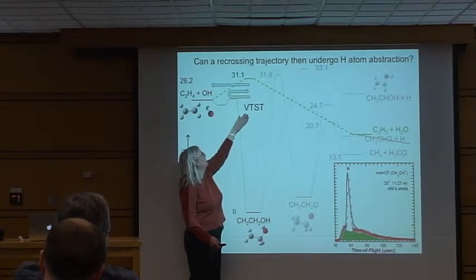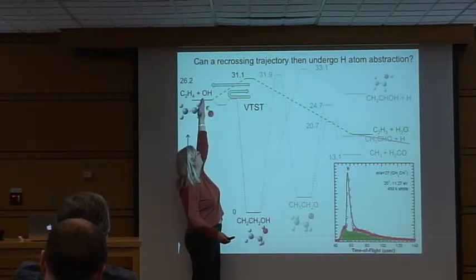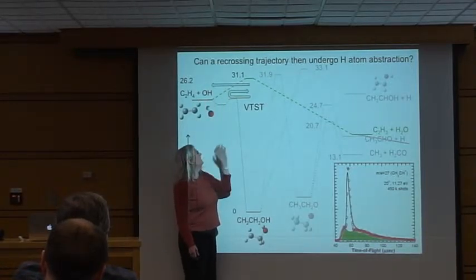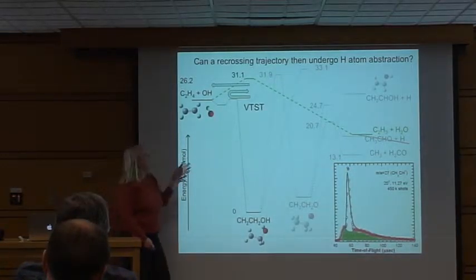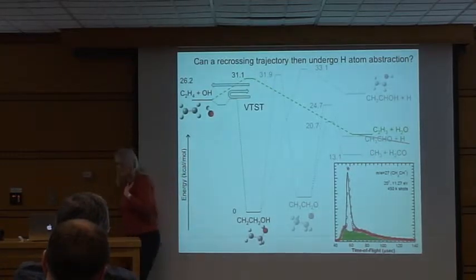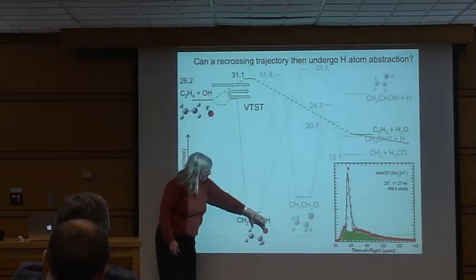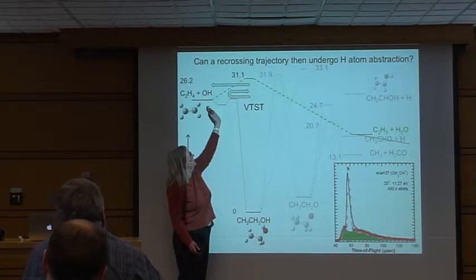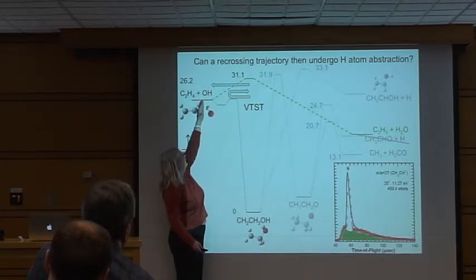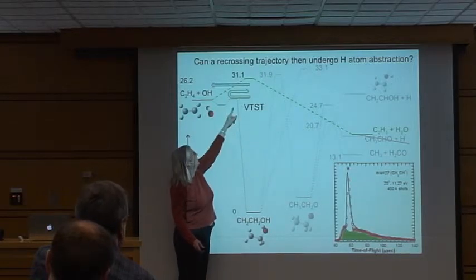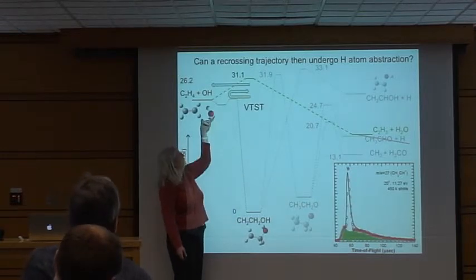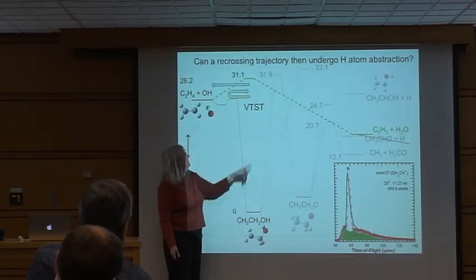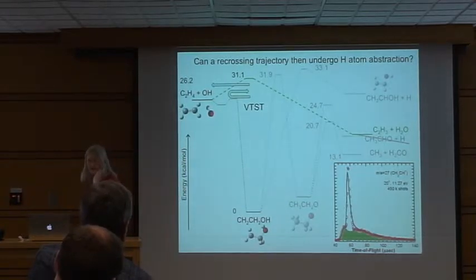When people do variational transition state theory, they get the lowest rate constant by moving the dividing surface out. They then assume no recrossing, use that number, and assume the rest goes back into the well. But what if it doesn't go back into the well? What if, as the OH is starting to move away from this radical and starts to recross — before it reaches the outer variational transition state — it abstracts a hydrogen atom on the way back in? That's perfectly reasonable — that's how you get the normal H-atom abstraction.